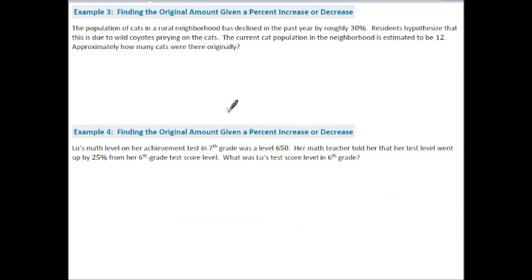Example three, finding the original amount given as a percent increase or decrease. The population of cats in a rural neighborhood has declined in the past year by roughly thirty percent. Residents hypothesize that this is due to wild coyotes preying on cats. The current cat population in the neighborhood is estimated to be twelve. Approximately how many cats were there originally? So in this scenario, we have an unknown and that unknown is the original number of cats. So let's let X equal the original number of cats.